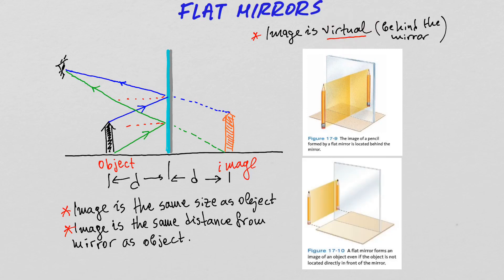One more thing to note is that even if the object, the pencil is moved to the side of the mirror, as long as the observer has a position that is at the correct angles with the image, they will be able to observe the image of that object from the mirror.